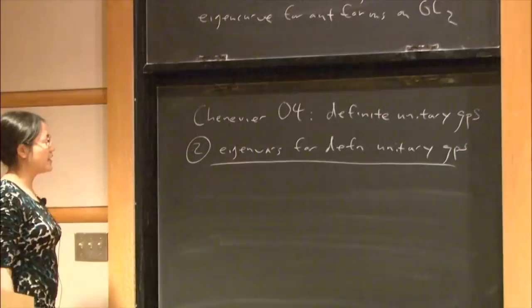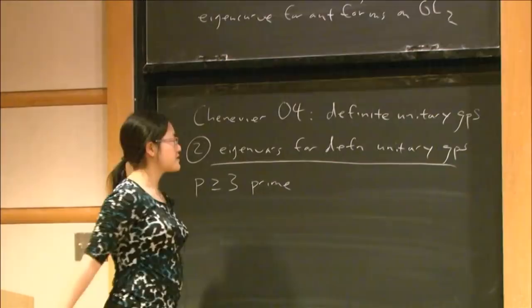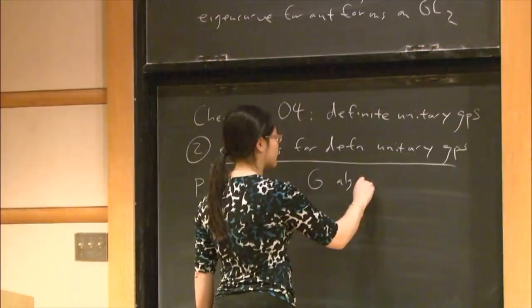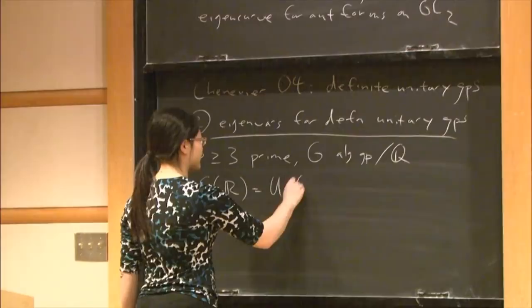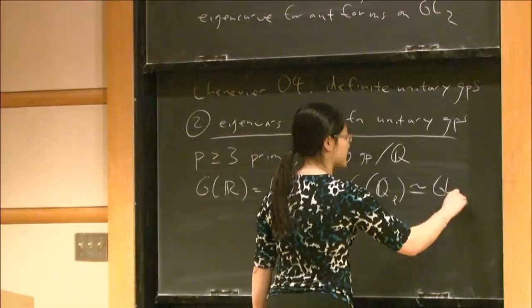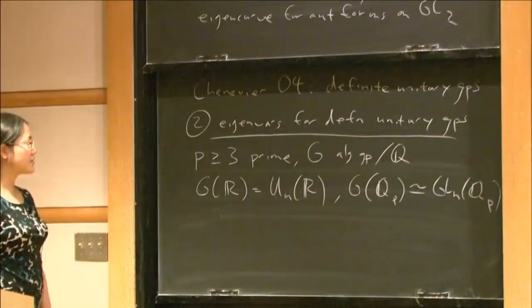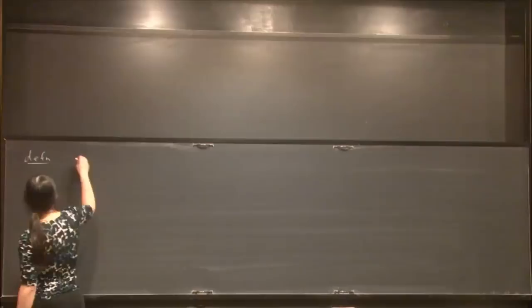To be very specific about the kind of group we're looking at: let p be an odd prime — just for notational convenience — and let G be an algebraic group over Q. I want the real points G(R) to be the real unitary group, but I want G to split at p, so G(Q_p) is isomorphic to GL_n(Q_p). We start with a group like this and define the space of automorphic forms on G.